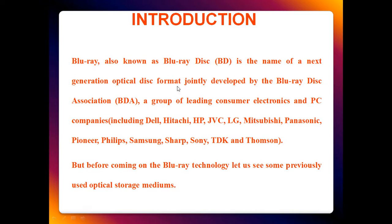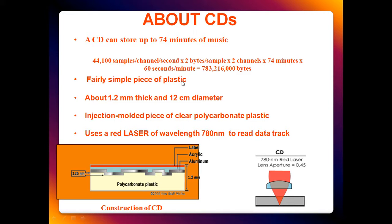Before coming to Blu-ray, let us see the optical storage mediums or devices which were there. Previously it was CDs. CDs normally can store up to 74 minutes of music, calculated from the number of samples per channel per second, two bytes per sample, two channels, 74 minutes, and 60 seconds per minute. So it comes down to the memory capacity of a CD — a fairly simple piece of plastic.